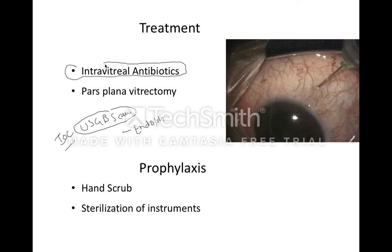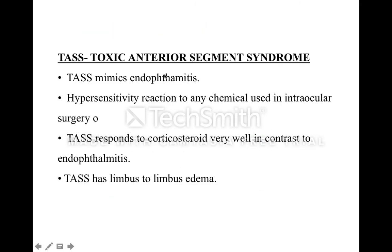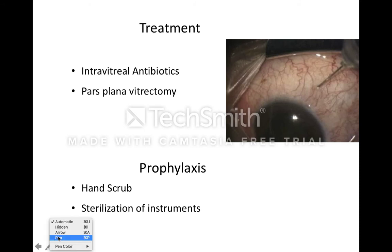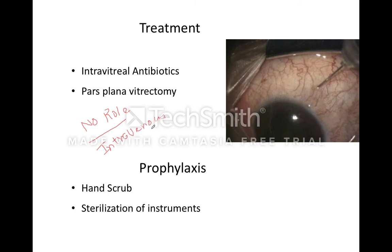The treatment involves intravitreal antibiotics. Remember, there is no role of intravenous antibiotics in post-operative endothalmitis. Using a 26-gauge needle, you inject at a point approximately 4 millimeters from the limbus, giving the antibiotic injection into the vitreous cavity. If the endothalmitis does not resolve within 48 hours, or if there is significant loss of vision, then you proceed with pars plana vitrectomy.